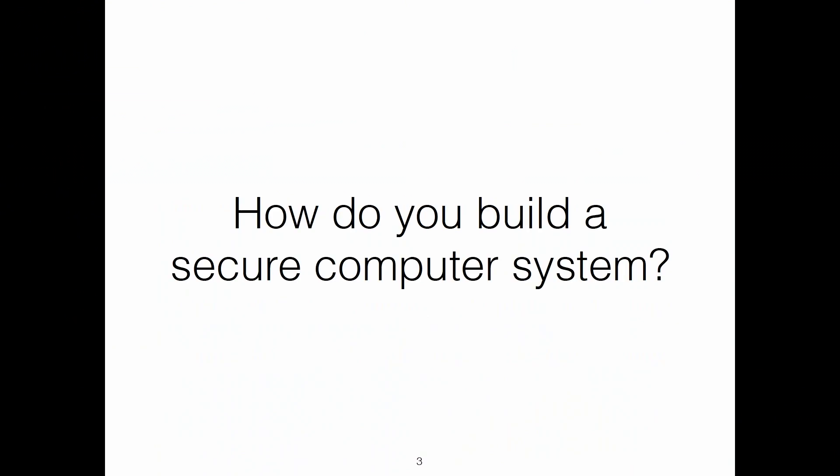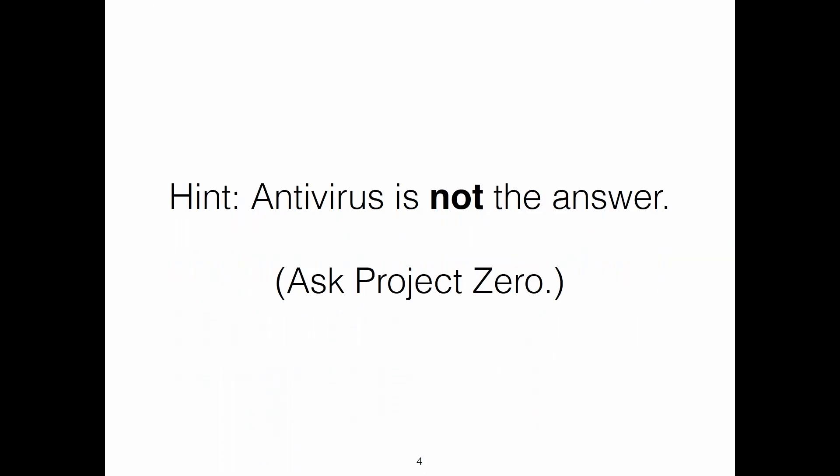So how do you build a secure computer system? Antivirus is not the answer. Just putting endpoint protection or adding some sort of security product on top is not the right way to go. You can ask Project Zero about this. The Google folks have made sort of a career out of breaking endpoint protection systems to hilarious effect. Instead, security needs to be a first-class design constraint. It needs to permeate your whole design process.